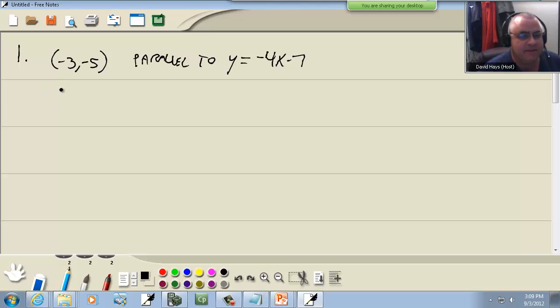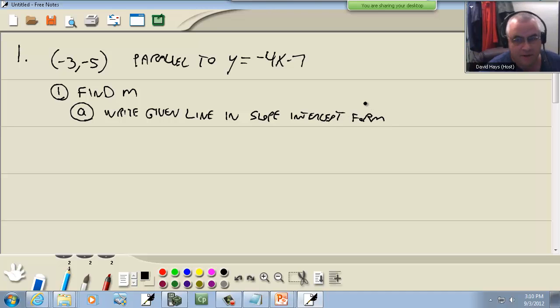If you remember our steps from last time, our first step was to find M. Our first sub-step within that is to write the given line in slope-intercept form. Now you might be looking at that thinking it's already in slope-intercept form. Yeah, this one is, but not all of them are.